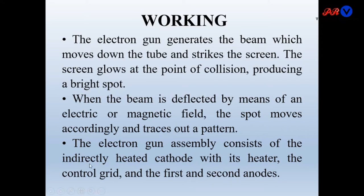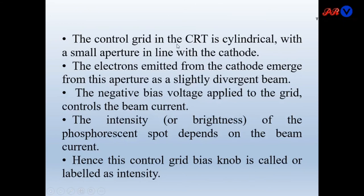The electron gun assembly consists of the indirectly heated cathode with its heater, the control grid, and the first and second anodes. The control grid in the CRT is cylindrical with a small aperture in line with the cathode. The electrons emitted from the cathode emerge from this aperture as a slightly divergent beam, and the negative bias voltage applied to the grid controls the beam current. The intensity or brightness of the phosphorescent spot depends upon the beam current, which is why this control grid bias knob is labeled as the intensity button on the CRT.